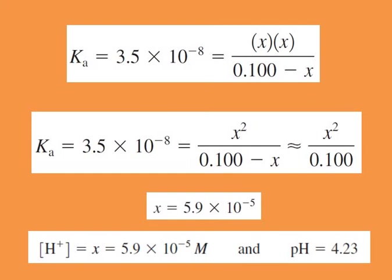We neglect X compared to 0.1 since it is very very small. That reduces to 3.5 × 10⁻⁸ = X² / 0.1. Solving, X equals 5.9 × 10⁻⁵, which is the proton concentration. Putting that into the pH formula — negative log of [H⁺] — gives a pH of 4.23.